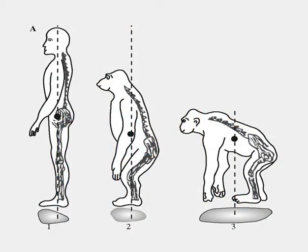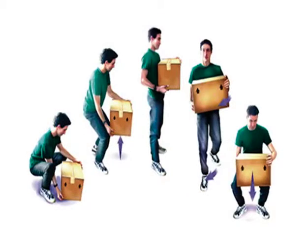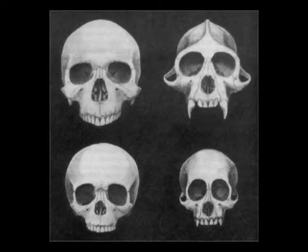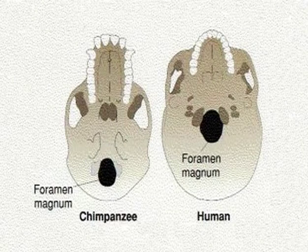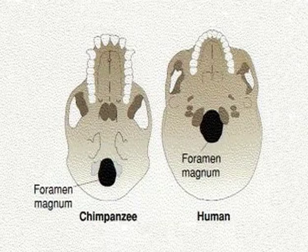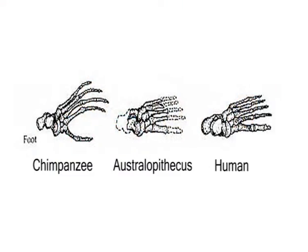A significant modification in becoming human is erect bipedalism and its associated developments. Bipedal locomotion frees the hands for carrying objects and for making tools. Free forelimbs are associated with reduction of facial prognathism, reduction of canine size, vertical elevation of the forehead, and expansion of the brain box. The foramen magnum shifts centrally so that the head is properly balanced in erect stance. Without an enlarged brain, free hands would be less meaningful.